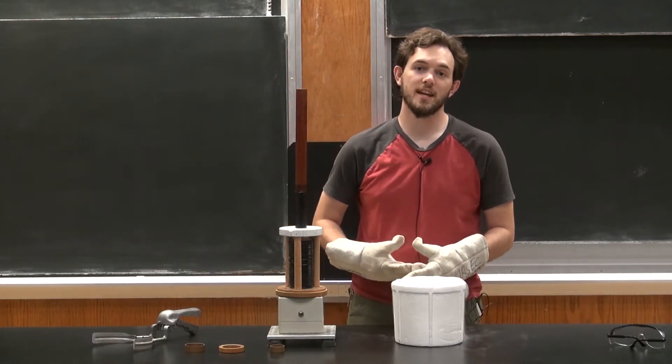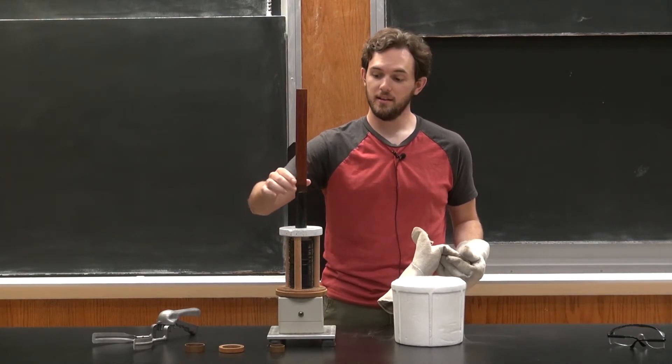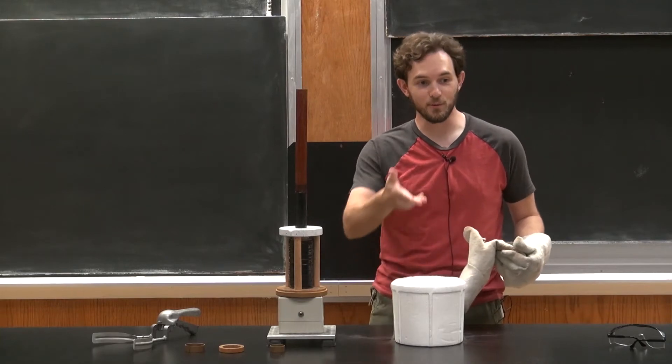So that was the large diameter ring which we saw before only jumped about this high up the rod. And in this case it has jumped all the way off and rolled down the table.